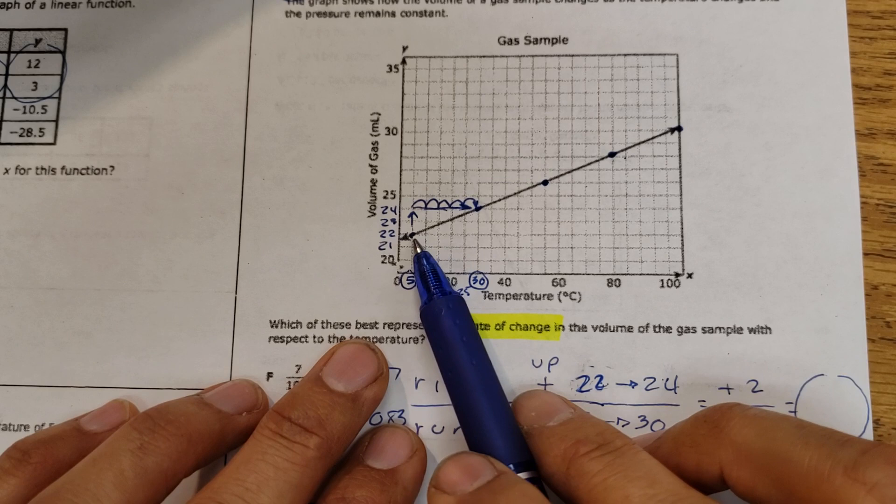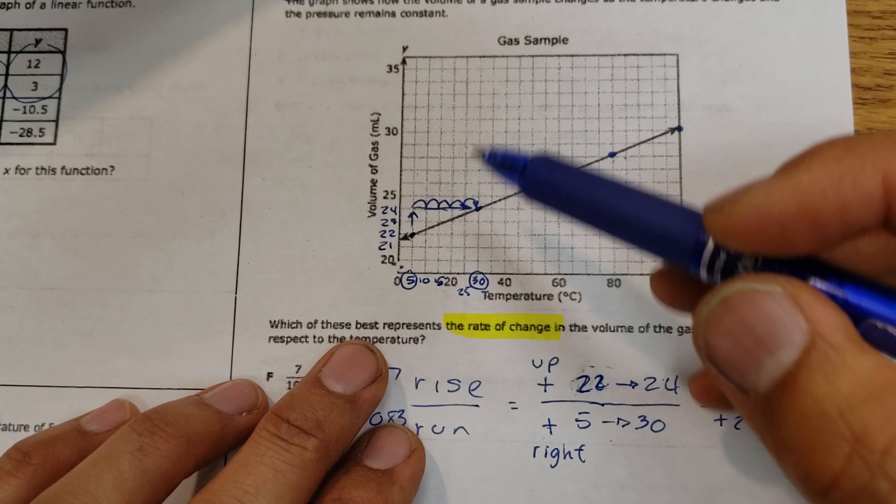What is the rate of change? You find your points. These seem to be good points. Rise over run. And then you divide this.